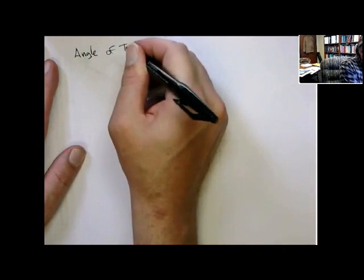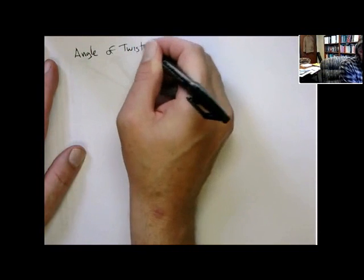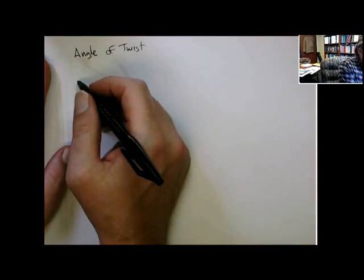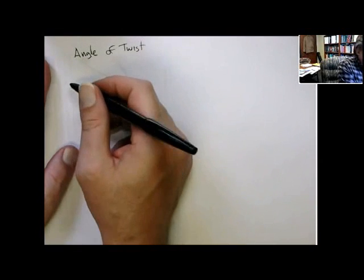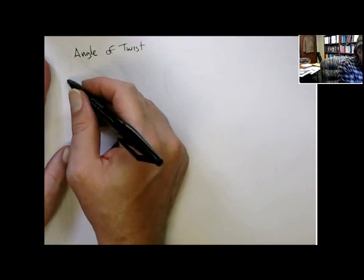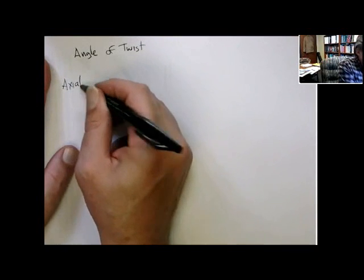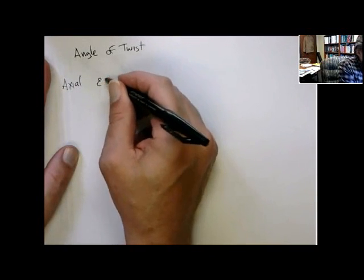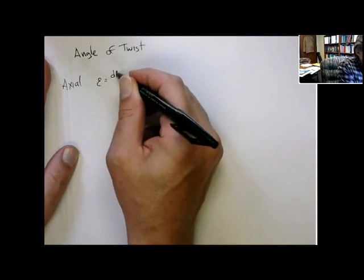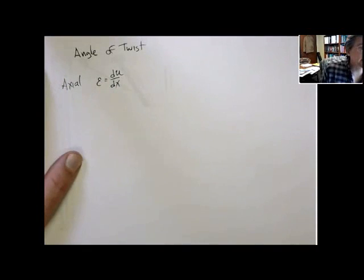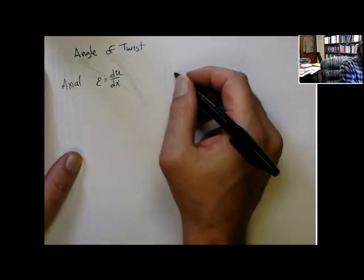So, just like in axial, we started off with kinematic descriptions, and that the strain shows the derivative of the displacement field with respect to x. Now, analogous to that, closure.